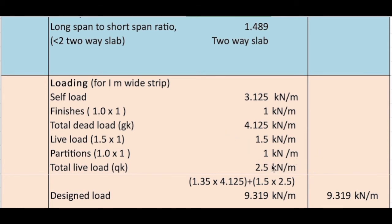Partition 1, so 2.5. So the design load will be 1.35 into total dead load plus 1.5 into total live load. That is 9.31.